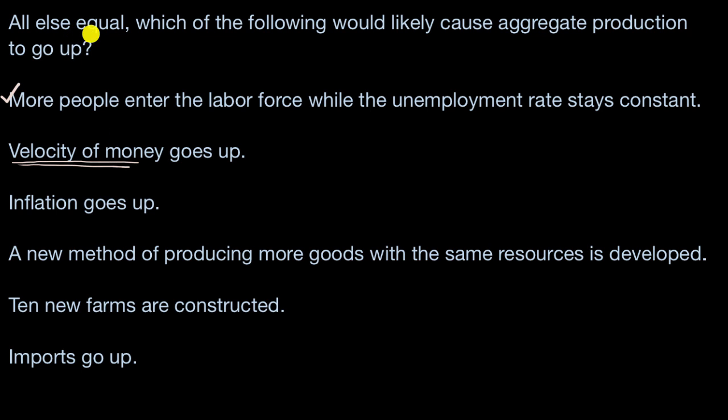There might be a scenario where people are transacting more, the money is circulating faster, but the total amount of output hasn't changed at all. There's the same number of people producing the same amount of goods using the same technology and the same capital. And so this does not have a direct linkage to the output going up all else equal. So I'll rule this out.